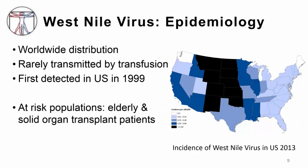West Nile virus has a worldwide distribution and can be found in Africa, Europe, North America, much of Asia, and sporadically in South and Central America. It was first detected in the United States in 1999 and is now very widespread, as you can see in the figure. People at highest risk for developing disease are older patients and immunosuppressed patients. Although there is no mosquito-to-person-to-mosquito transmission, rarely people can be infected via transfusion or organ transplant.